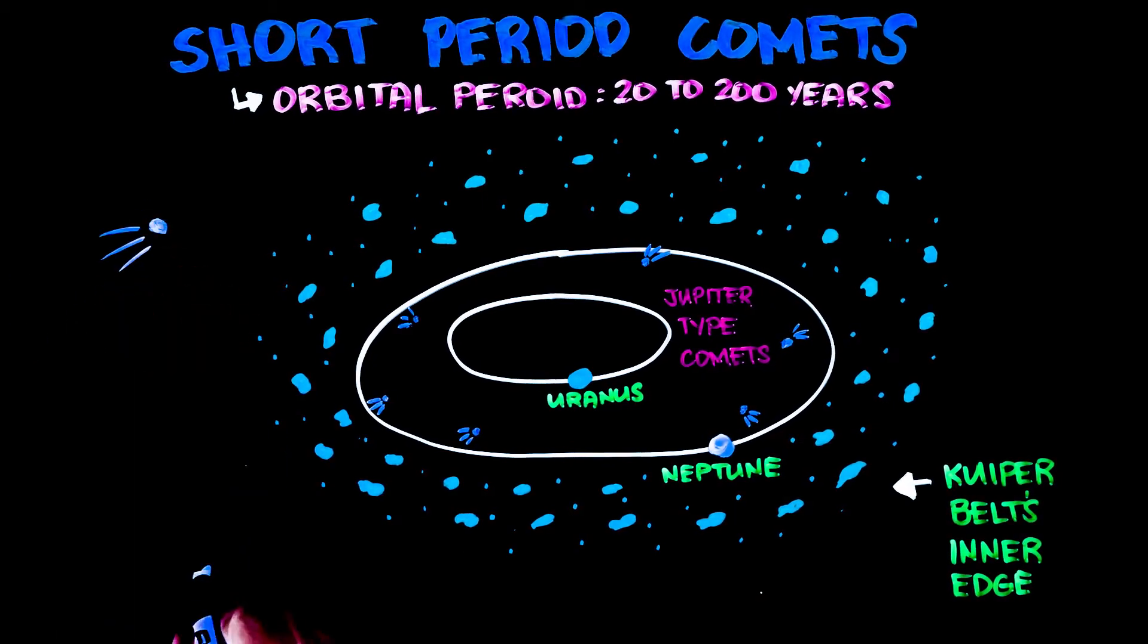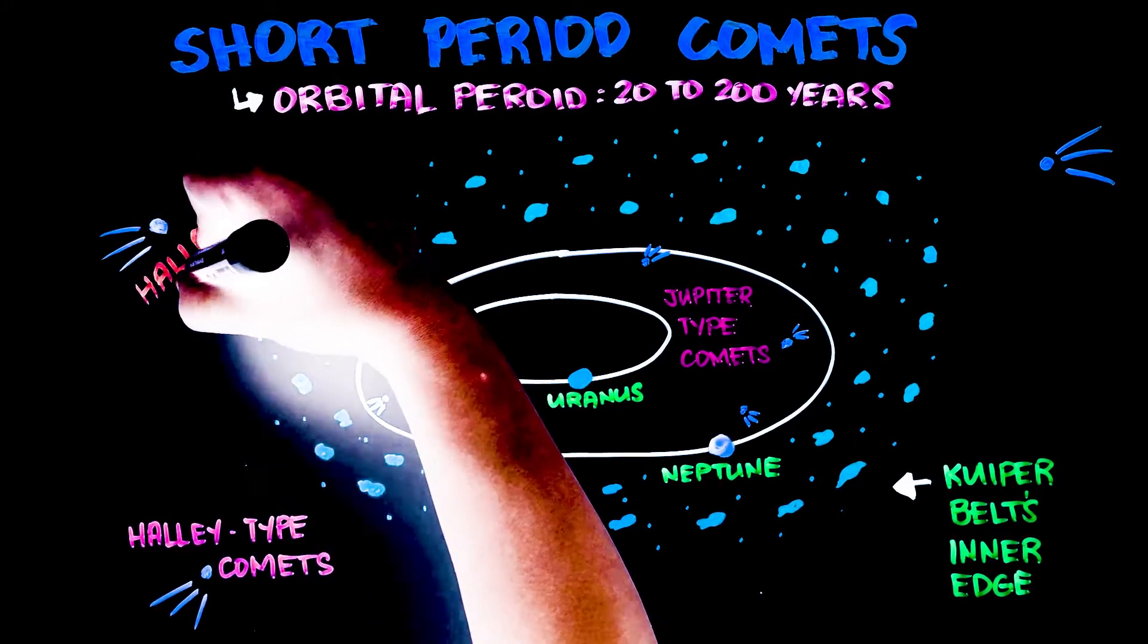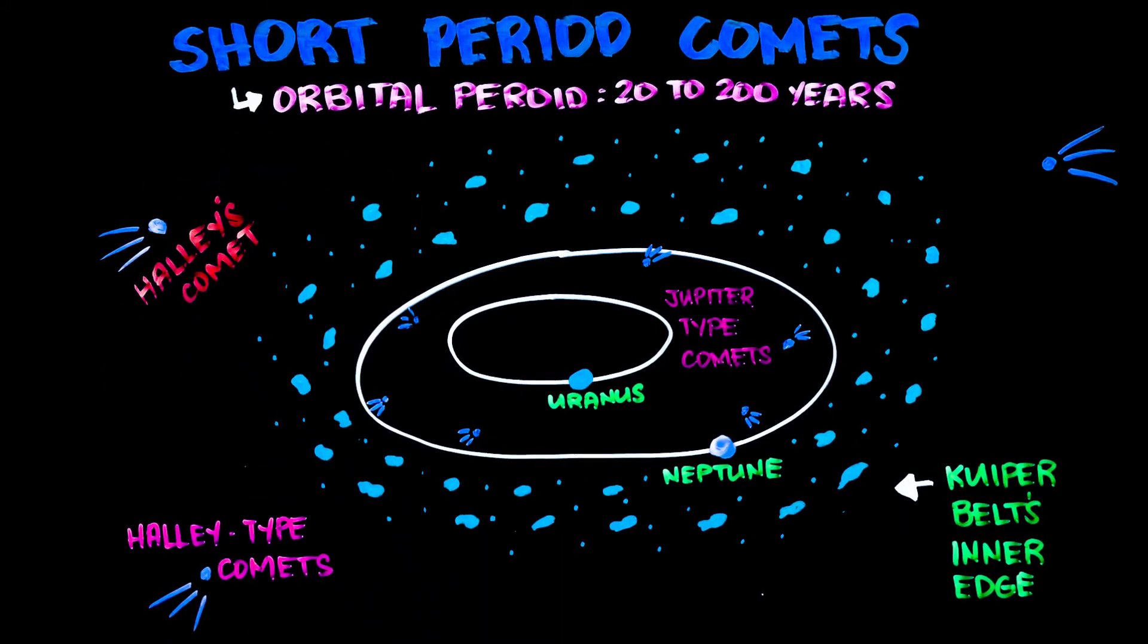Halley-type comets often appear only once or twice within one's lifetime. The most popular type of this comet is, of course, the Halley's Comet that goes around the Sun once every 76 years.